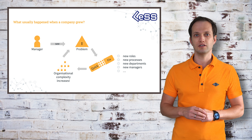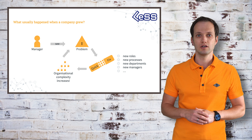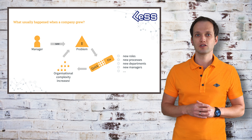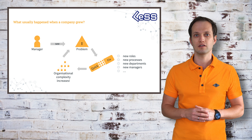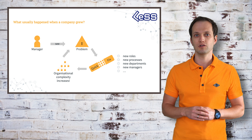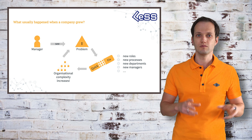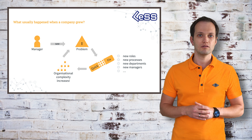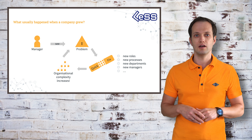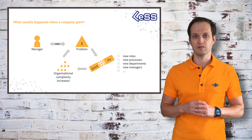Then they discover that they have high code duplication and they want to fix that — they want to reuse code. So they install architects who split the many products and the software into many small components that are then reusable for different products. Then they install component teams to actually work on those many little components. Later they figure out that they have integration issues, and they install integration teams with an integration manager who takes care of integrating all of that.